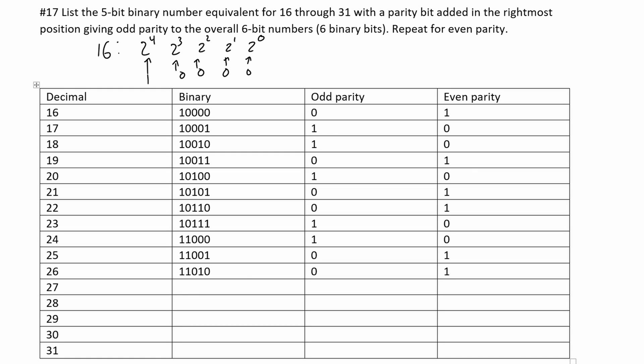27 is just 26 plus 1, so we have 1 1 0 1 1. Even number of ones, so we're going to have a 1 in our odd parity and a 0 in our even parity.